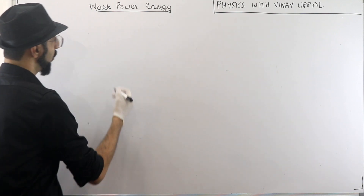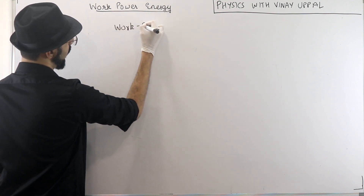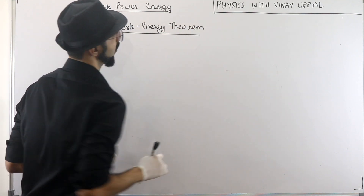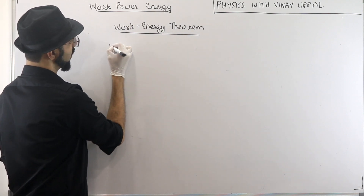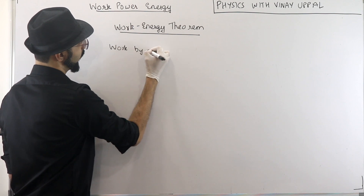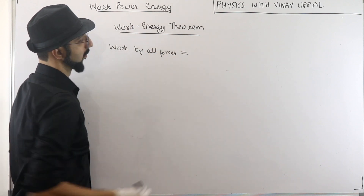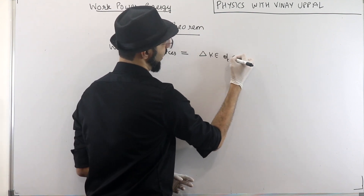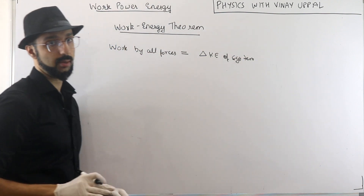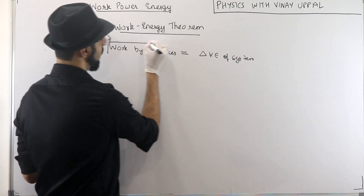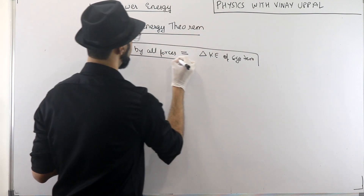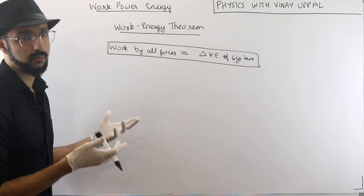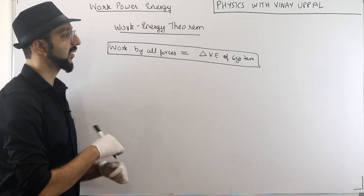Now let us talk about what we are learning about work — it's going to make things easy for us. Let us look at probably the most important theorem in this chapter: the Work-Energy Theorem. Work energy theorem states that net work done by all the forces is equal to the change in kinetic energy of the system — change means final minus initial, always. This theorem is valid for any system of any number of particles.